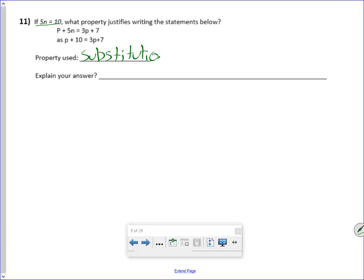All right. What property justifies the statement below if 5N equals 10? Well, the property used was substitution. Because what he said is, okay, remember, the equal sign flows both ways. If 5N equals 10, then anywhere I see 10 written, I can write 5N. Anywhere I see 5N written, I can write 10, which is what he did here. He changed 5N to 10.